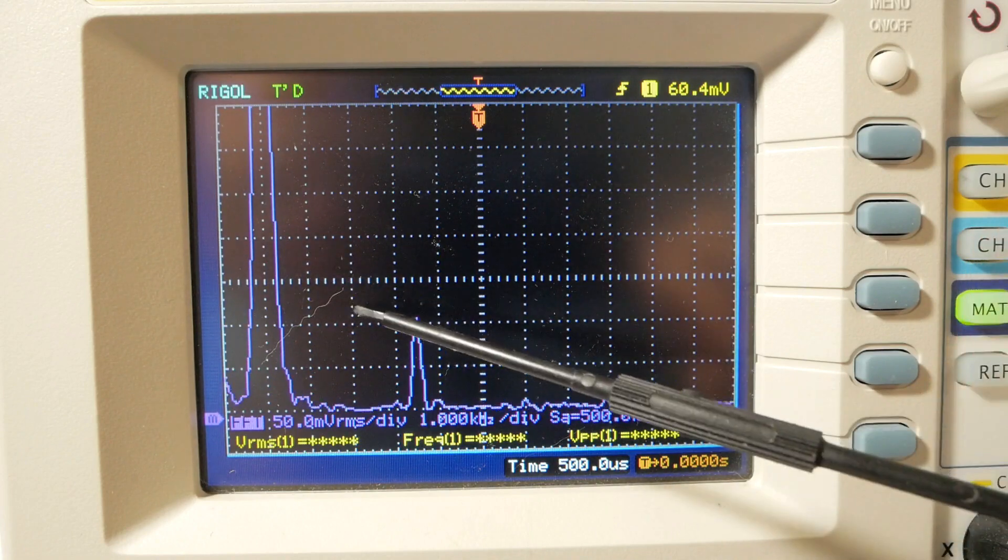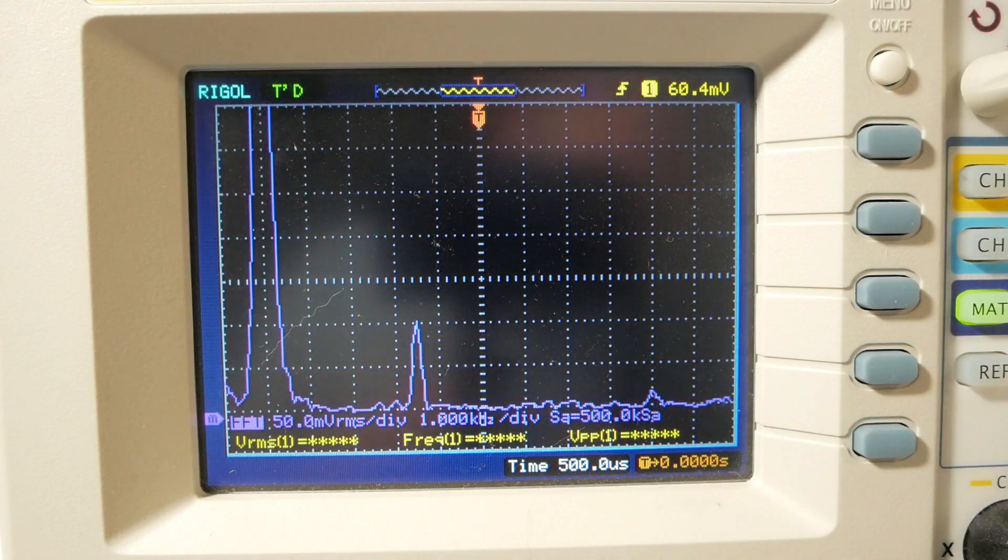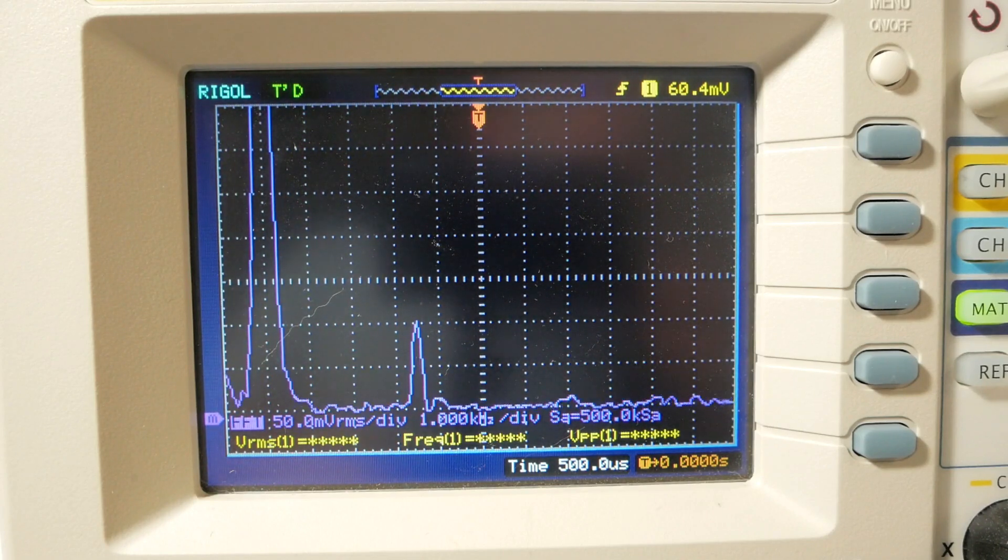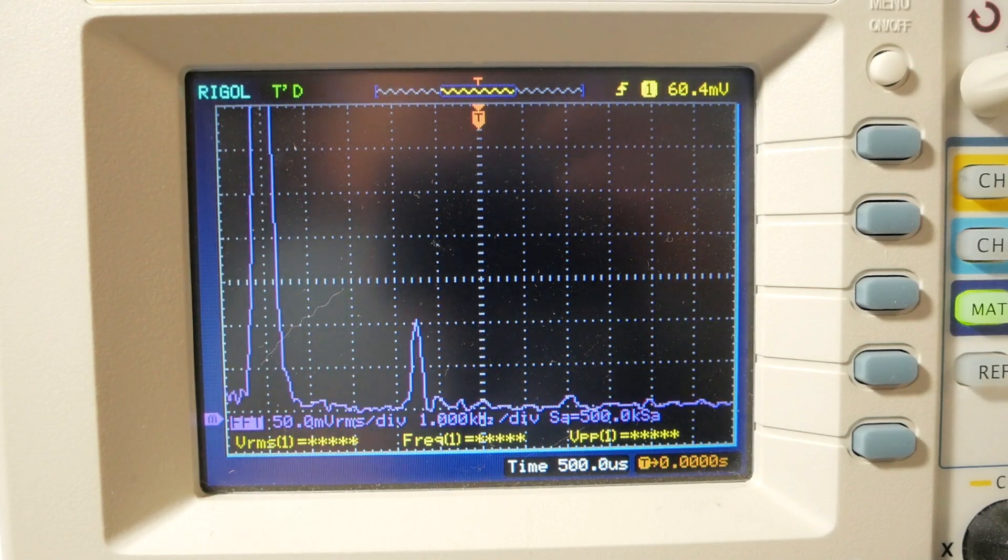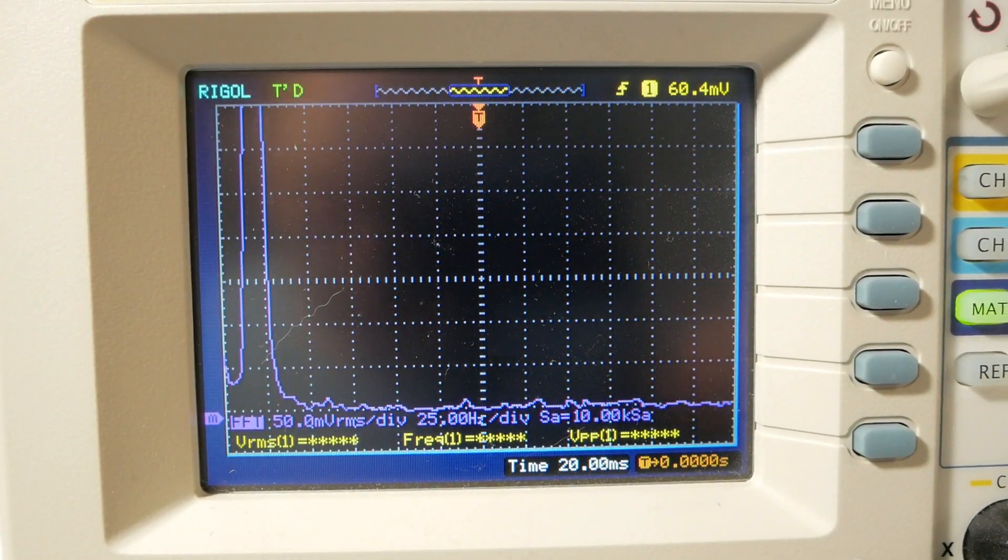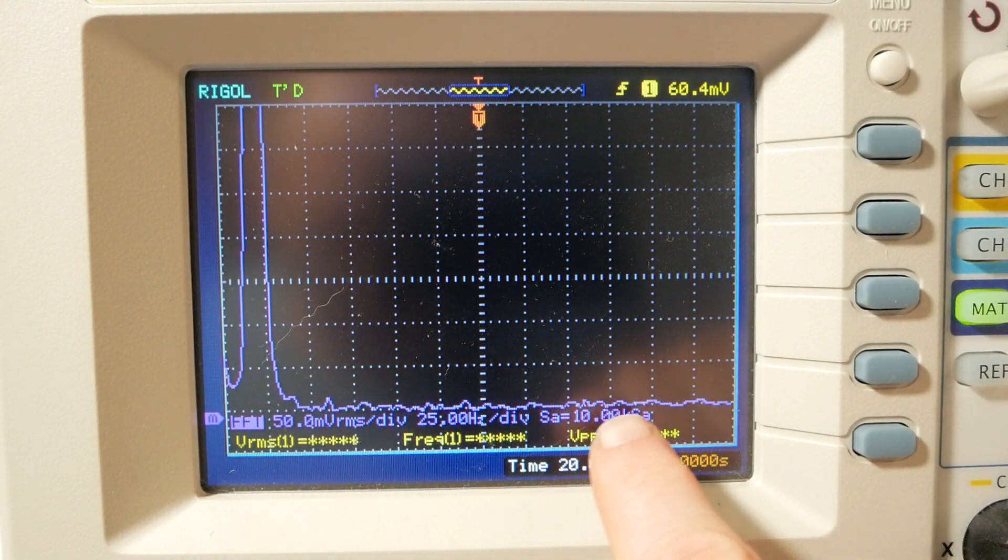If you watch my channel, of course you know that this is the pilot signal that's built into the source, and it's at one percent of the fundamental just as a reference. So the amplifier is clean at one kilohertz. Let's take a look at some other frequencies. Looking at 20 Hertz now and it's pretty clean.